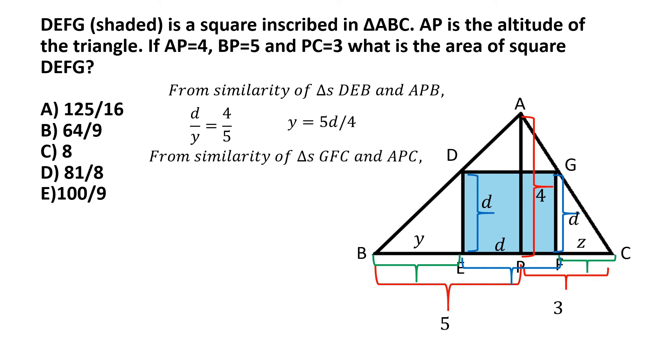And again, from properties of sides of similar triangles, the ratio of the corresponding sides are equal. So we can write d by z from triangle GFC, and the corresponding sides from triangle APC would be AP, which is equal to 4, and PC, which is equal to 3. So we can write d by z is equal to 4 by 3. And from this, we can express z in terms of d as z is equal to 3d by 4.